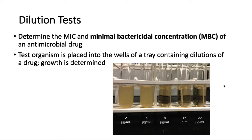In the dilution test — which can be done in tubes as shown in the figure, or also in plates — different dilutions of the antimicrobial or antibiotic are added to the bacterial suspension, and then you look at the lowest dose that prevents the growth of the bacteria. As you can see on the diagram, we start with 2, 4, 8, 16, and 32 micrograms per mL. At 2 and 4 — very low concentrations — the bacteria are still growing and the broth is turbid. But starting at 8 there is clarity, so the minimum inhibitory concentration in this case would be 8 micrograms per milliliter.